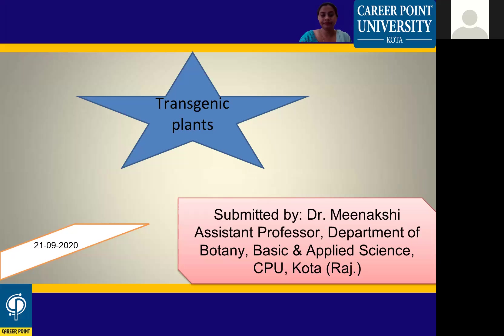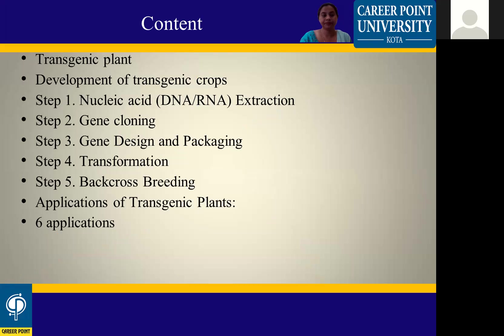Transgenic Plants. When developing a transgenic plant, there are 5 steps involved: Nucleic Acid Extraction, Gene Cloning, Gene Design and Packaging, Transformation, and Backcross Breeding. After all these steps, there is a development of a transgenic plant.